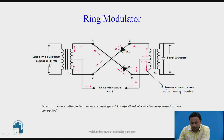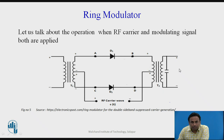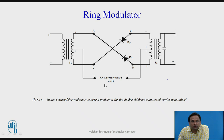Now let us see the operation when both the carrier signal and the modulating signal are applied. Due to the center-tapped transformer, the polarities are plus, minus, plus, minus. During the first positive half cycle, diodes D1 and D2 conduct and D3, D4 are reverse biased, producing a positive half cycle output. During the negative half cycle, D3 and D4 conduct, but the polarities are reversed due to diode switching, producing a minus-plus output.